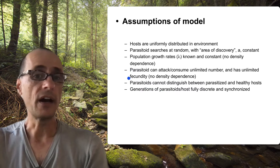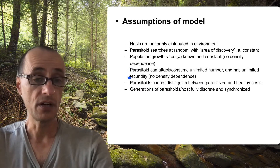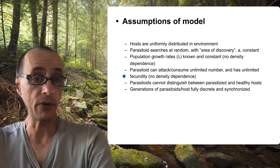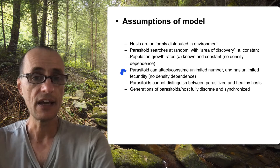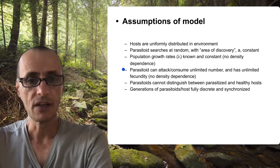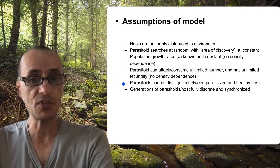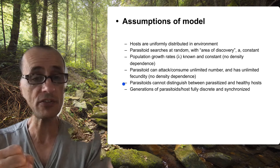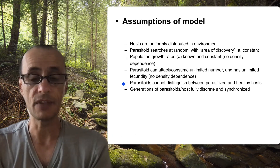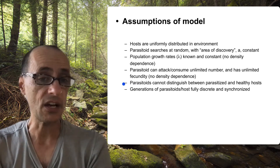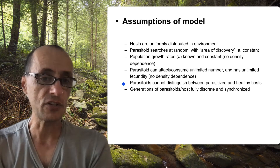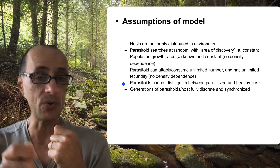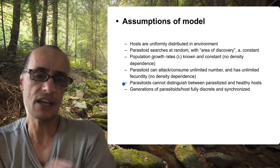The parasitoid can attack or consume an unlimited number of potential prey hosts and has no limits on how it can do that. So the more it encounters, the more it can attack, and it's never limited by the number of eggs it has, for example. The other thing is that the parasitoids can't distinguish between hosts that have been parasitized versus hosts that are healthy. So if it encounters a healthy host, this generates a potential new parasitoid. If it attacks a host that's already been parasitized, it's kind of a waste — whoever was there first gets that host, and it doesn't have an ability to usurp it.